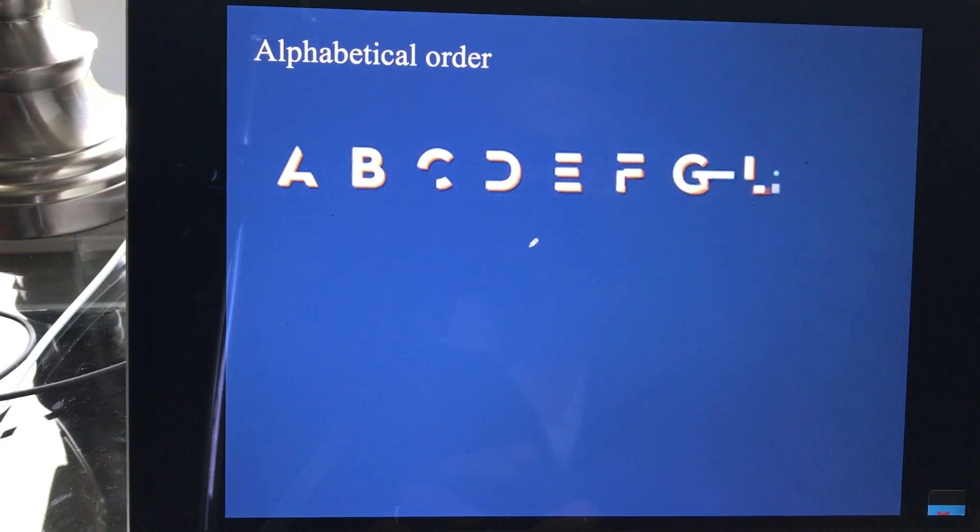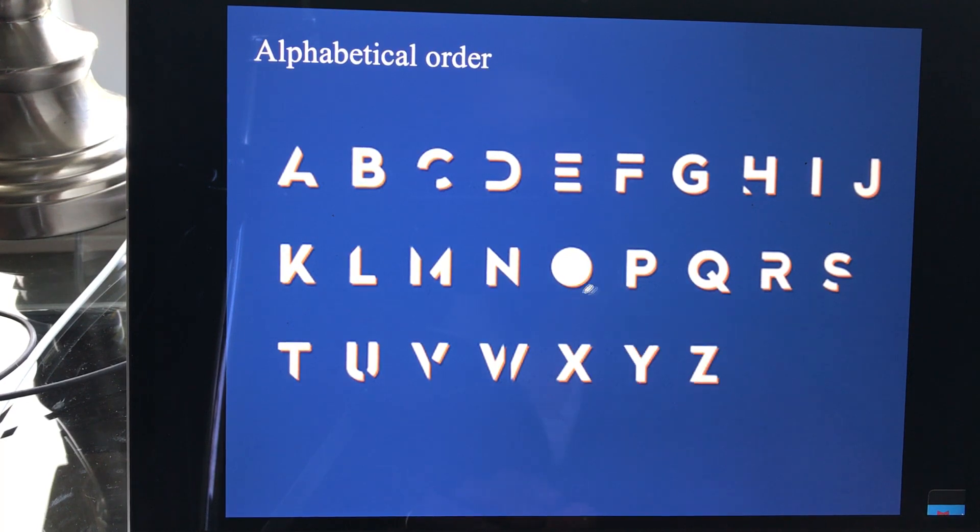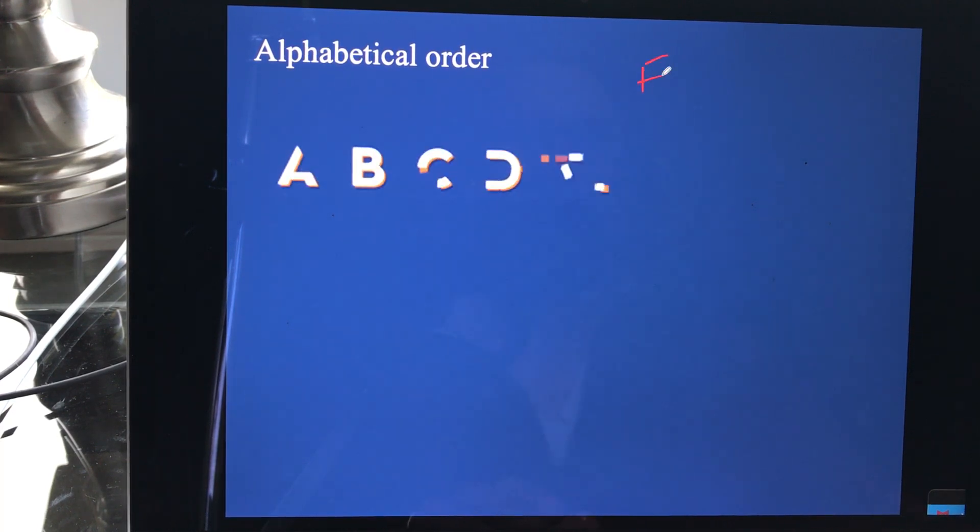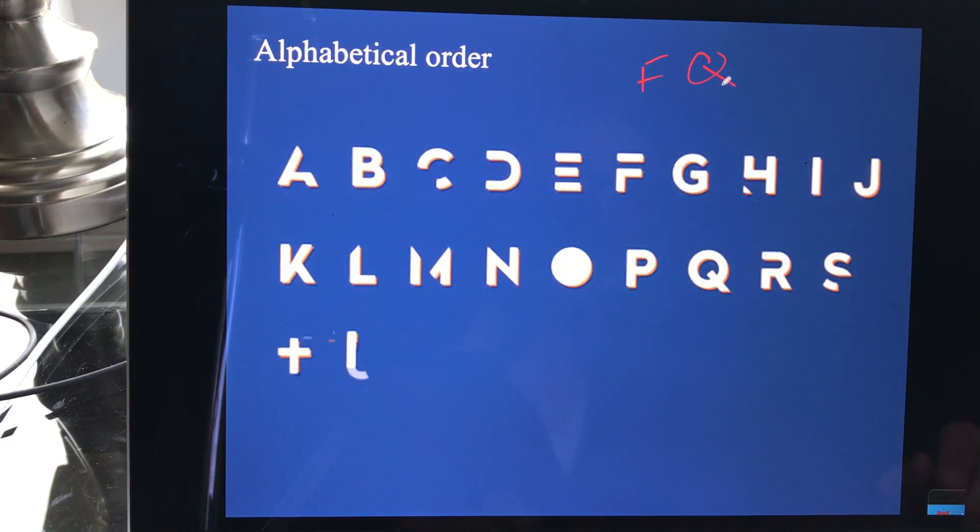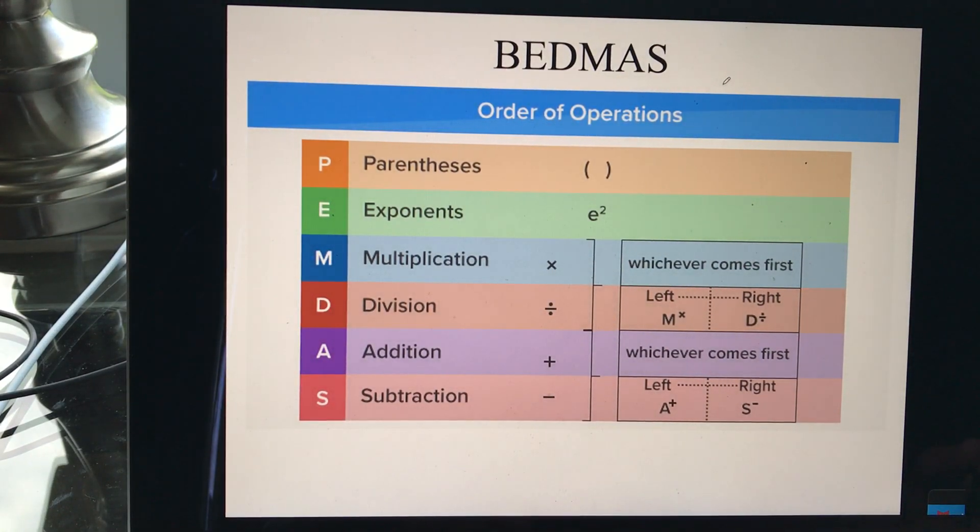We have alphabetical order. We have the alphabet: A, B, C, D, F, G. You can imagine trying to memorize the alphabet if we just guessed random letters like F, and then Q, and then so on. So the order there is important as well. We have, of course, order of operations for BEDMAS, which helps us.